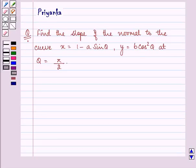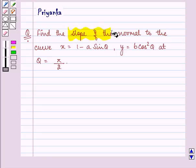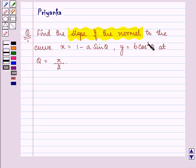Hello friends and how are you all doing today? The question says find the slope of the normal to curve x is equal to 1 minus a sine theta, y is equal to b cos square theta at theta is equal to pi by 2.